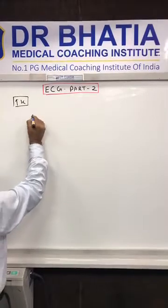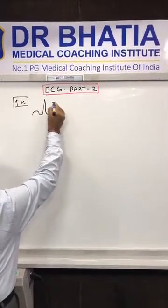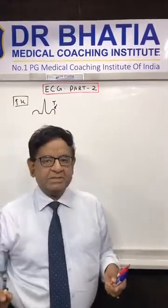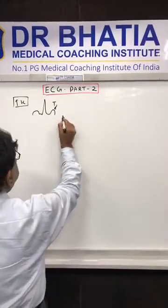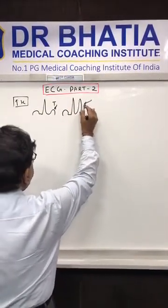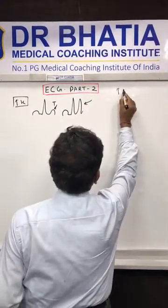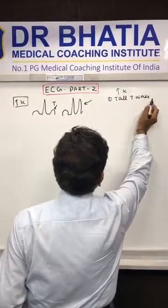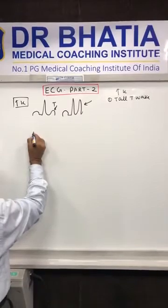This is a normal recording — this is the T wave. When hyperkalemia starts occurring, the first finding is tall T wave. So tall T wave is the first finding of hyperkalemia.